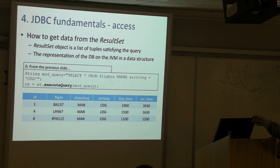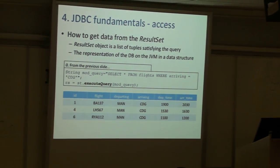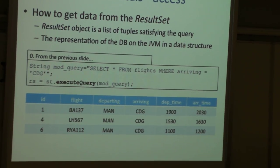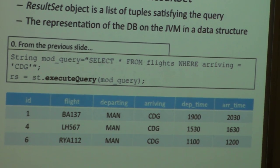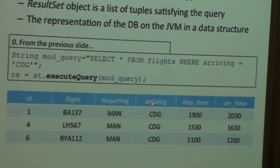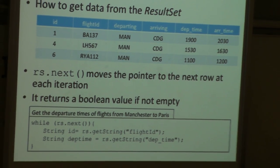If we design this query, select all rows from flight table where arriving is Charles de Gaulle airport in Paris, you will get this view of the database in the ResultSet object. We have this object but we want to exploit this data. We want to put it on a screen, change the identification number, or put new departure times.